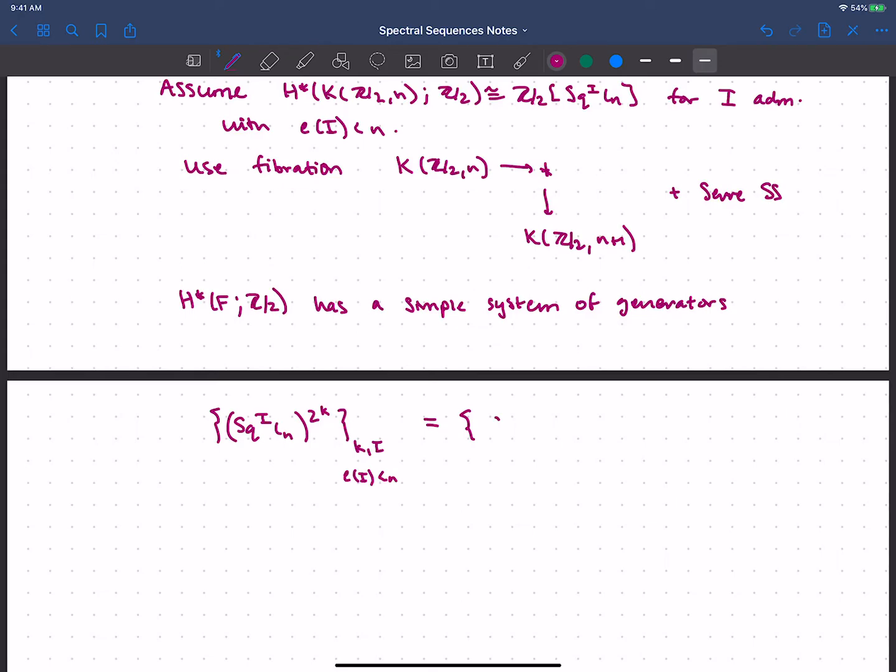So awkwardly over this page break here, I should take each square i iota n, where i is admissible and has excess less than n, and then I should take that and raise it to powers of 2. So this is really for various K and i, where I make sure that the excess of i is less than n. And from our lemma, we saw that if you have these admissible sequences with excess less than n and you write them to powers of 2, then this is the same as squares with a different sequence j on iota n, where the excess of j is less than or equal to n. Our lemma went exactly backwards, so we're using that lemma backwards, I suppose.